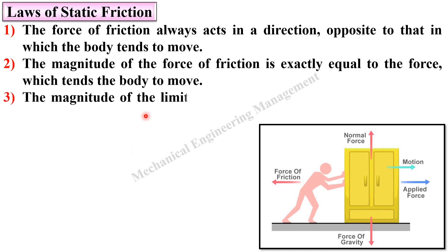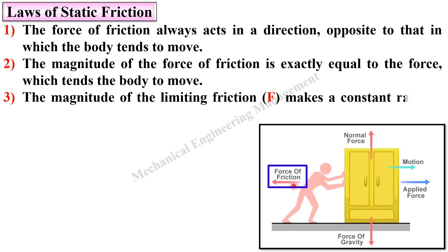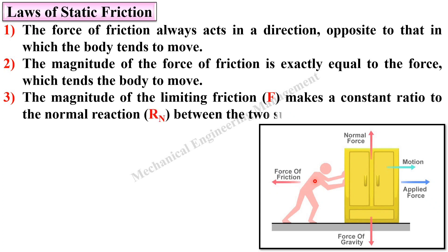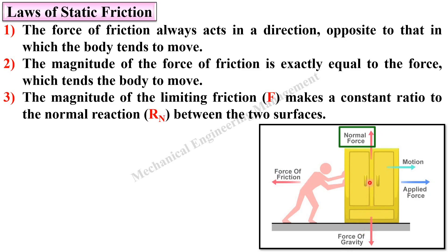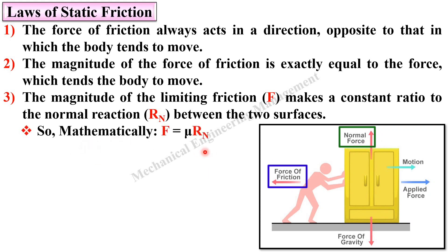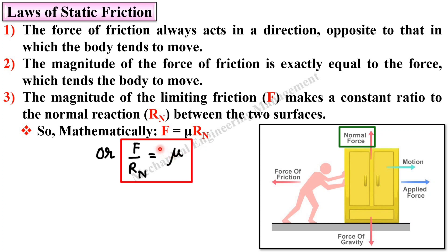Third: the magnitude of this limiting friction makes a constant ratio to the normal reaction between the two surfaces. This is the contact surface and perpendicular to it there is a normal reaction. This friction force makes a constant ratio to this normal reaction. Mathematically, F = μRn, meaning F divided by Rn — that constant ratio is called the coefficient of friction, μ.